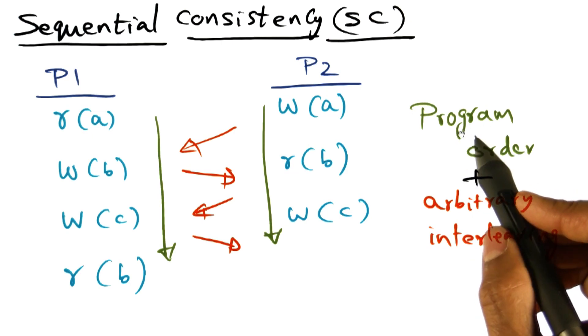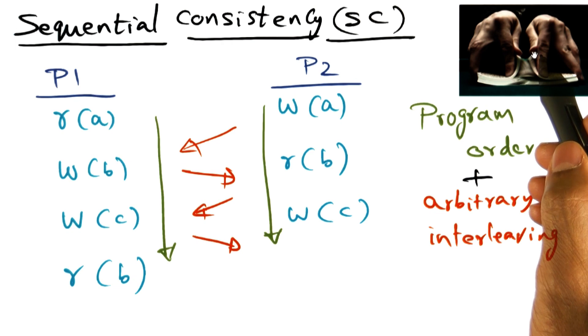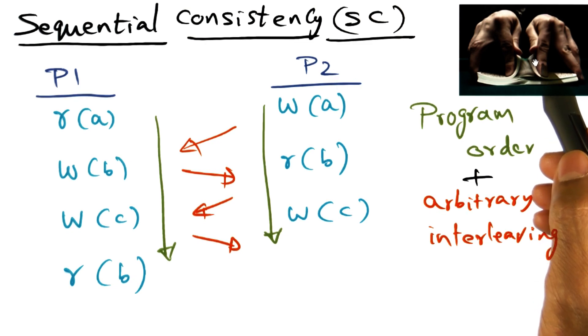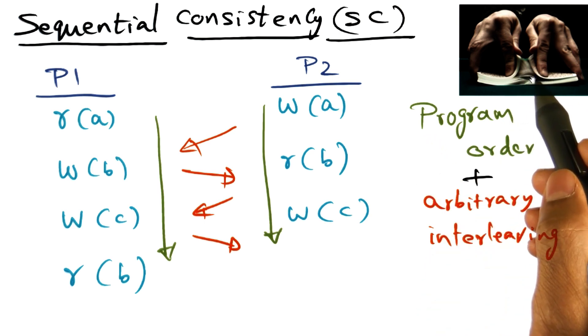An analogy that will drive home the point about sequential consistency is what you might see in a casino. If you watch a casino card shark shuffle cards, he might take a card deck and split it into two halves.